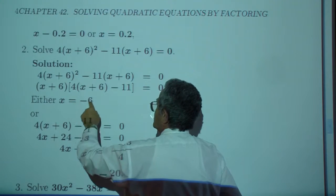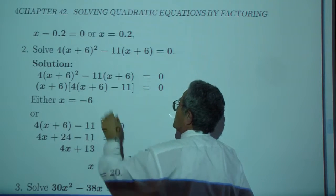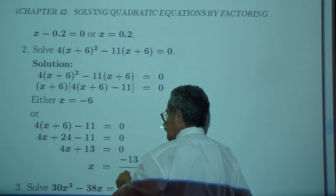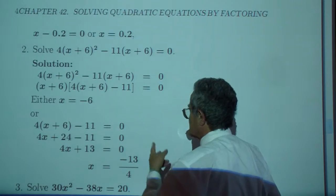So you already know that X can be negative six, because that factor can be set to be zero. Work on this factor here. You get 4X plus 13, which is zero, or X is negative 13 over four. Two solutions.